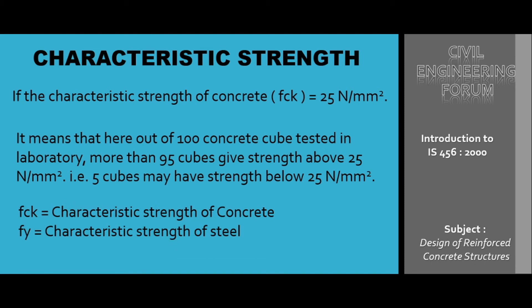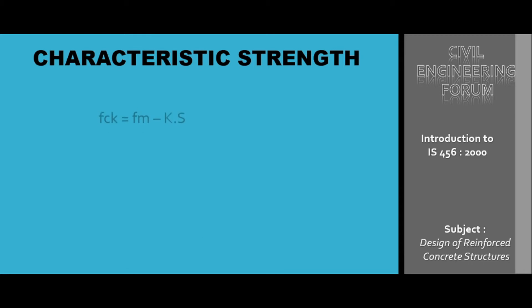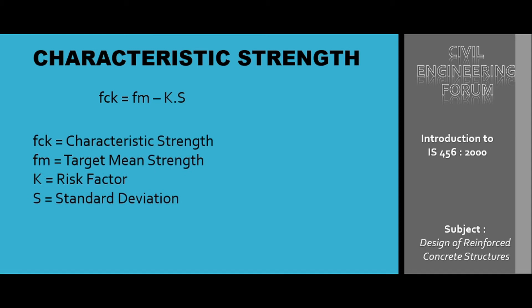Here, fck is the characteristic strength of concrete and fy is the characteristic strength of steel. In the formula, fck is the characteristic strength, fm is the target mean strength, k is the risk factor, and s is the standard deviation. The value of k, the risk factor, is taken as 1.64. We will find out where this 1.64 comes from and what the standard deviation and target mean strength will be.